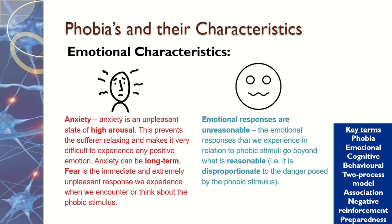The second emotional characteristic is that the emotional responses are unreasonable. Although a lot of us don't like spiders and might ask someone to remove one from a room, someone with a phobia will refuse to enter a room at all. If they were in an interview and there was a spider there, they might run out, scream, or completely freeze because they can't cope with the situation.